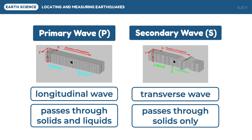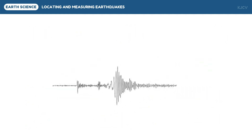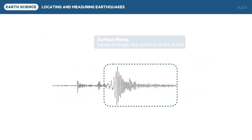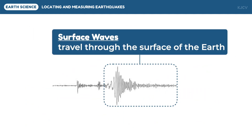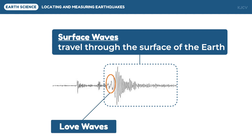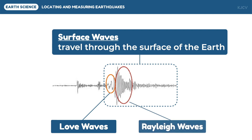Let us look at the previous seismogram to look at this type of wave. These stronger waves are called the surface waves. The shorter and faster surface waves are called the Love waves, and the longer and slower surface waves are called the Rayleigh waves.